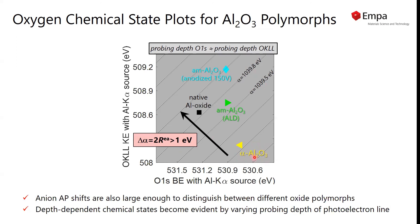We see that the shifts in the Auger parameters are larger than 1 eV, and typically the Auger parameter can be resolved within 0.1 eV accuracy. So these changes are really relevant, and this means that we can distinguish between different oxide polymorphs, which allows studying of compositional and structural changes in complex oxide films.